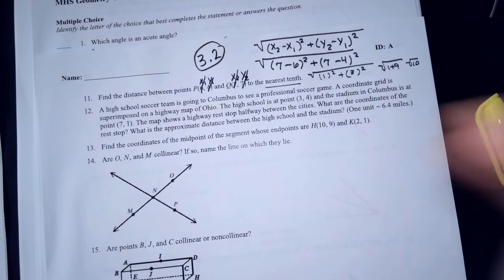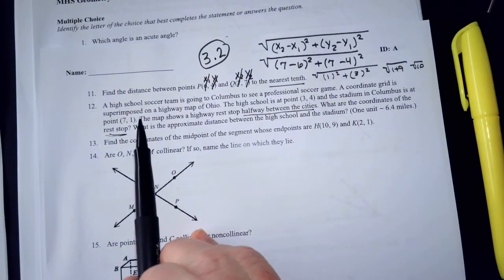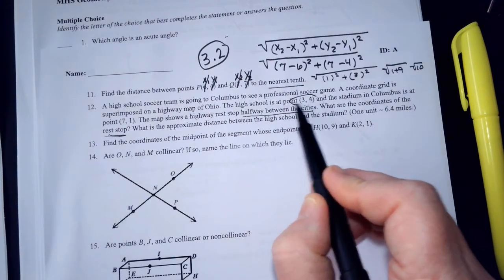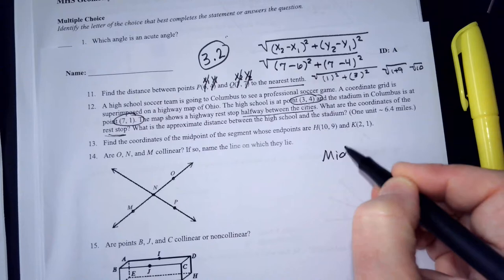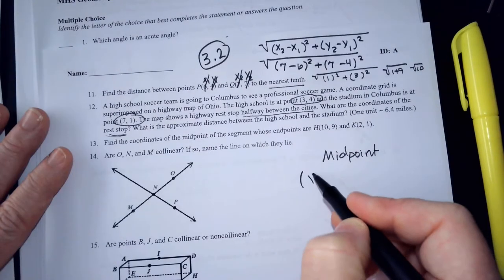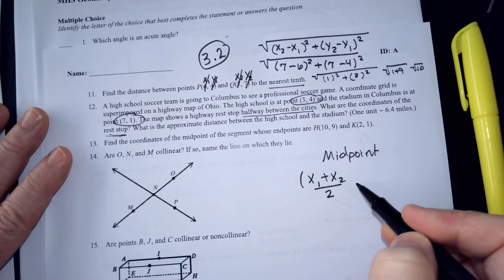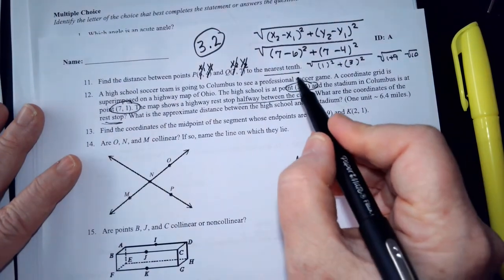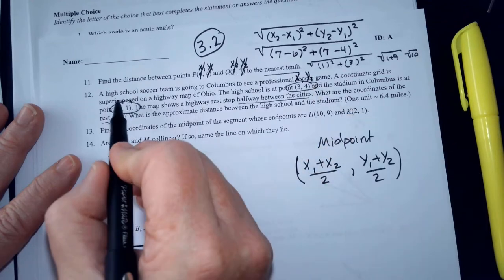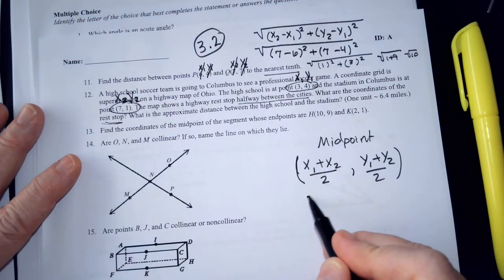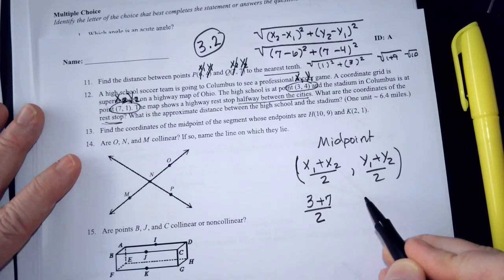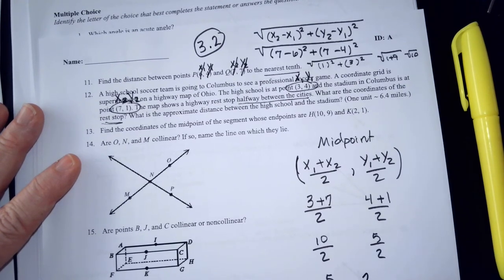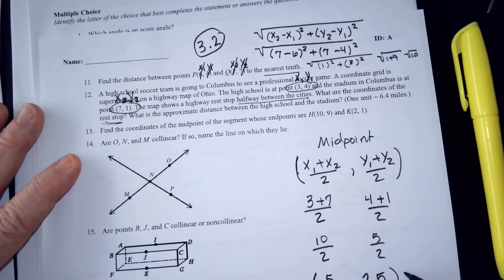12 says a high school soccer team. When we read number 12, very important is that it says you're looking for something halfway between. So, halfway between means you're going to use what formula? Midpoint. The midpoint formula says take x sub 1 and x sub 2 and average them. And then y sub 1 and y sub 2 and average them. So, I'm going to use this is x sub 1 and this is y sub 1 and this is x sub 2 and this is y sub 2. 3 plus 7 divided by 2 and 4 plus 1 divided by 2. 10 over 2 is 5. 5 over 2 is 2 and a half. This is the rest stop.